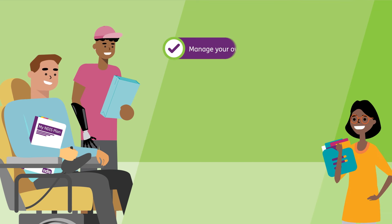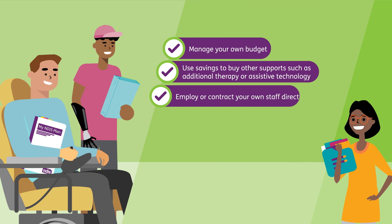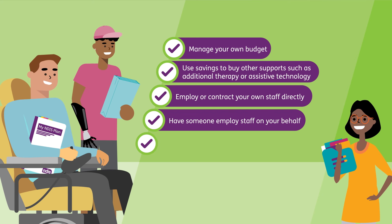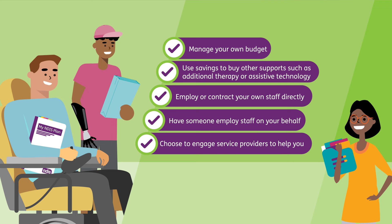You can choose to manage your own budget and use savings to buy other supports such as additional therapy or assistive technology. You can employ or contract your own staff directly or have someone employ staff on your behalf. If you self-manage part or all of your plan, you can choose to engage service providers to help you — for example, you may choose to employ someone to help you with record keeping or financial reporting.